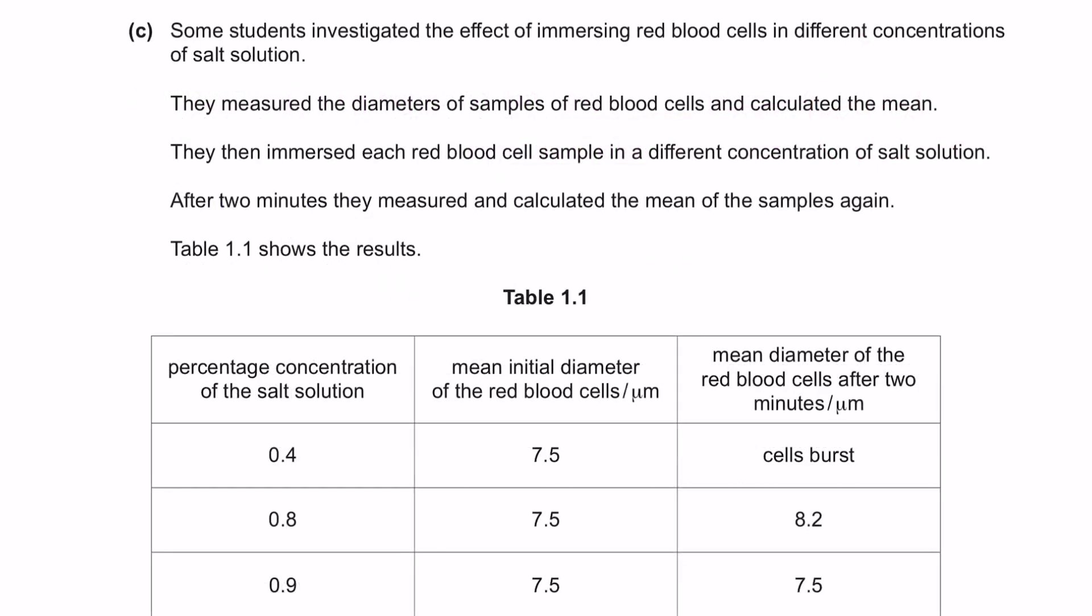Next, question C. Some students investigated the effect of immersing red blood cells in different concentration of salt solution. They measured the diameters of sample of red blood cells and calculated the mean. They then immersed each red blood cell sample in a different concentration of salt solution. After 2 minutes, they measured and calculated the mean of the samples again. Table 1.1 shows the results.